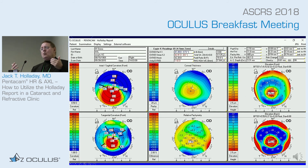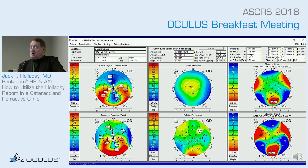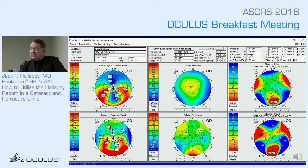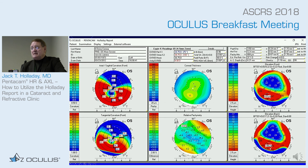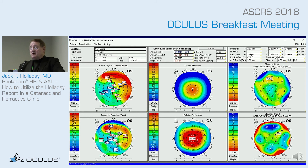Here is pellucid marginal degeneration. The classic sign is the crab-claw pattern on the axial map. This results from the inferior peripheral band of thinning and bulging, visible on the relative pachymetry map as thinning in that zone, with corresponding inferior elevation. You can see a moderate crab claw in one eye and a severe one in the other — you really can't miss those because the crab claw always shows up clearly.